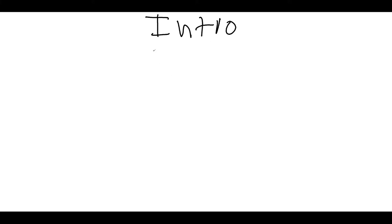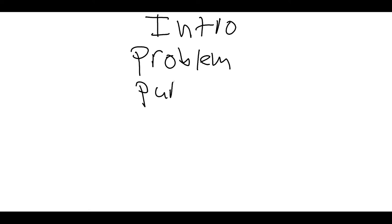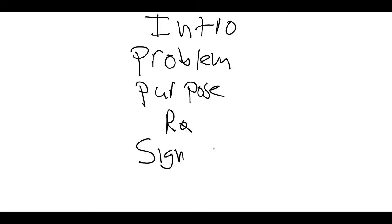Now, within your chapter one, there are several components that we've talked about before that we need to be clear on. In your chapter one introduction, there are several key parts. You're going to have your problem statement — we discussed prior how to write a problem statement, justification of the study, background of the study, et cetera. You're going to have your purpose statement, which is the star of today's video. You're probably going to have your research questions, objectives, or hypotheses. We will deal with that in a future video. You're going to have your significance.